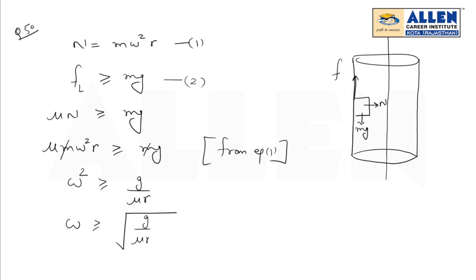Here I can write: omega should be greater or equal to √(g/μr). The value of g is 10, μ is 0.1, and the radius is 1. After simplifying, we get omega equals 10 radian per second.